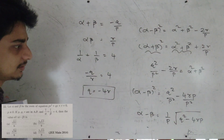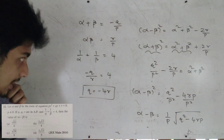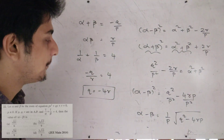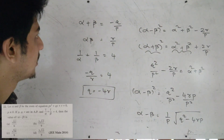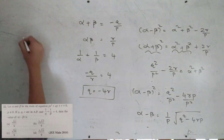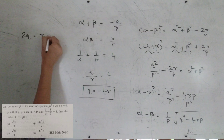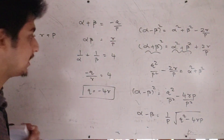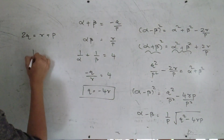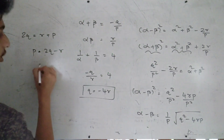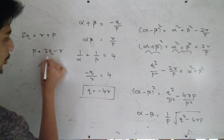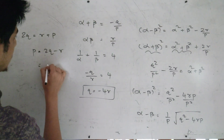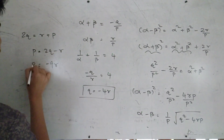Using the AP condition: 2Q = P + R. With Q = −4R, we get P + R = 2Q = −8R, so P = −9R. Then Q = −4R and P = −9R.